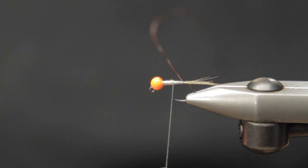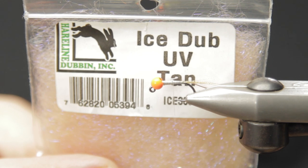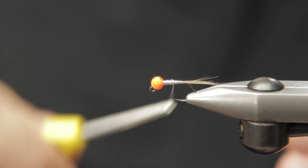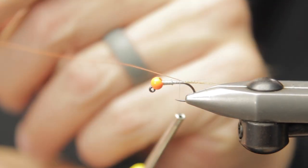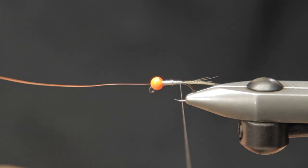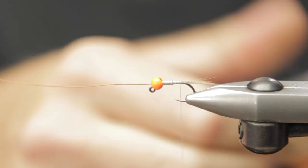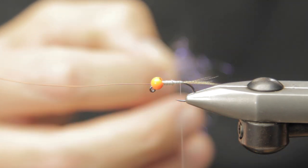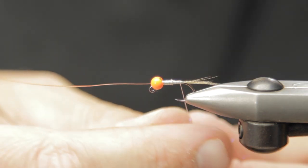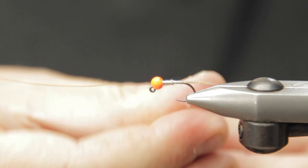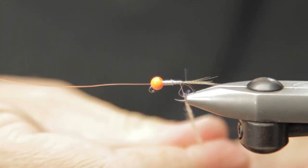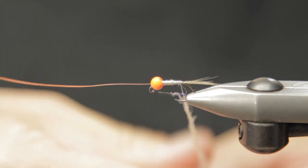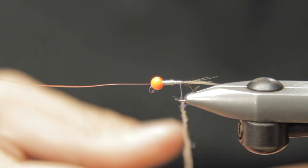I'm going to use some UV Ice Dub in tan. It's an amazing translucent color. You can use browns, blacks, blues, purples. You can tie this fly any which way and you'll probably actually be able to match most of those options. Remember, press as much of the color out of your fingertips as possible to get a super good dubbing loop.